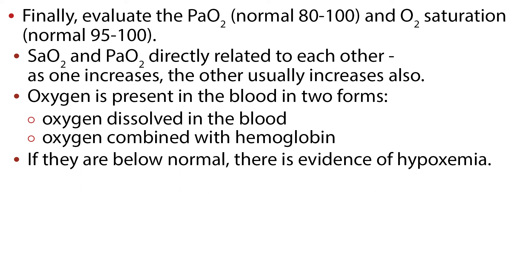Oxygen is also combined with hemoglobin. The SaO2, or the oxygen saturation of hemoglobin, is expressed as a percentage. At full saturation, the normal SaO2 is 95 to 100%. The SaO2 and PaO2 are directly related to each other — as one increases, the other usually increases also. So oxygen is present in the blood in two forms: oxygen dissolved in the blood and oxygen combined with hemoglobin. If they are below normal, there is evidence of hypoxemia.